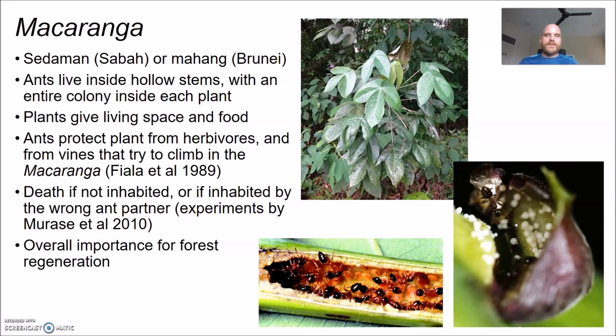The ants protect the plants from herbivorous insects — they come out and attack any caterpillar that tries to eat the leaves. Amazingly, some species are so highly evolved that the ants, instead of eating the caterpillar, take it to the edge of the leaf and drop it off, because they only eat the food provided by the plant through food bodies and extra-floral nectar. The ants also attack and kill vines trying to climb up the Macaranga, which is very useful as these plants often grow in open areas with lots of vines. This mutualism is obligate: if the plant doesn't have ants inside it, it will die. And ants can't live anywhere else than inside the plants, as far as we know.